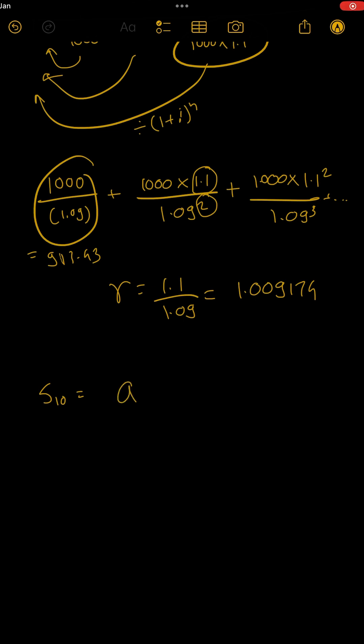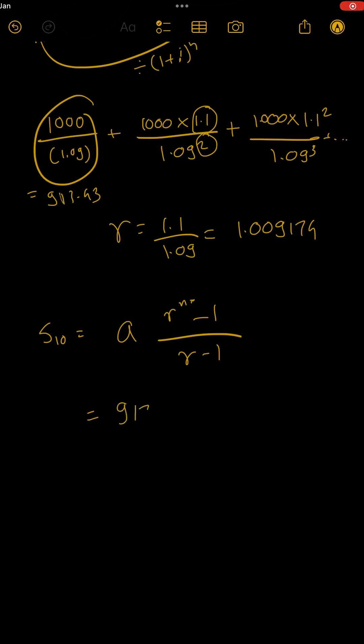Then we can directly use sum of 10 terms of GP, which is a × (r^n - 1) / (r - 1). A is 917.43, r - 1 is 0.009174. How do we do r raised to 10? Take this on your calculator, then × and = nine times to get raised to 10, and minus 1. So whatever value you get, divided by this and multiplied by this.